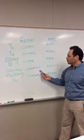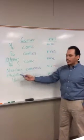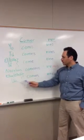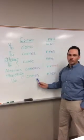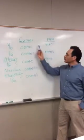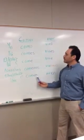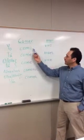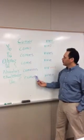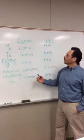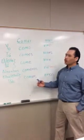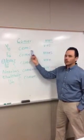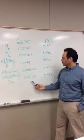Nosotros comemos, ellos or ellas comen, ustedes comen. So once you know these endings, you can take another regular ER verb and just plug in the endings. For example, correr, to run — I run would be yo corro, and so on.